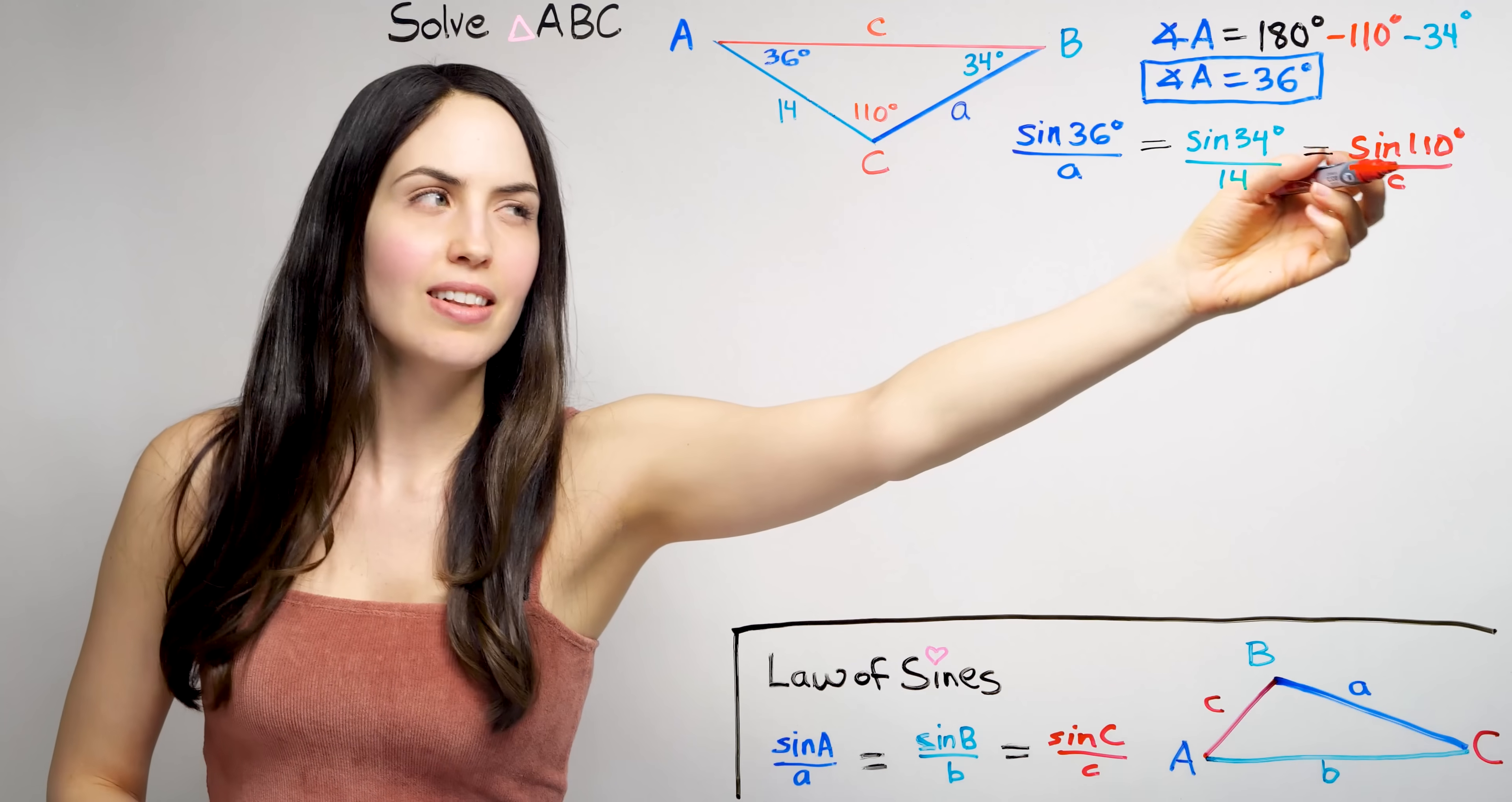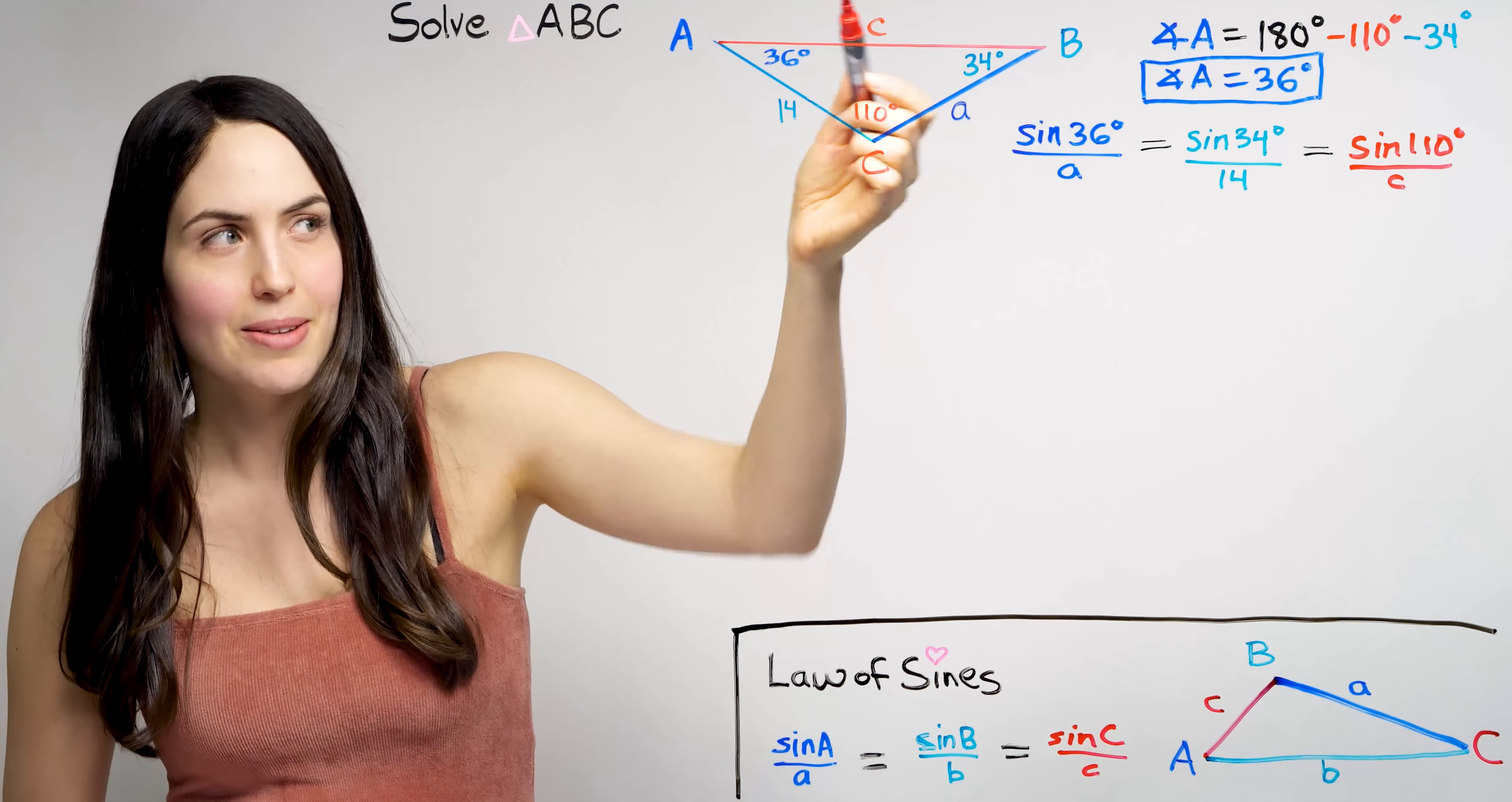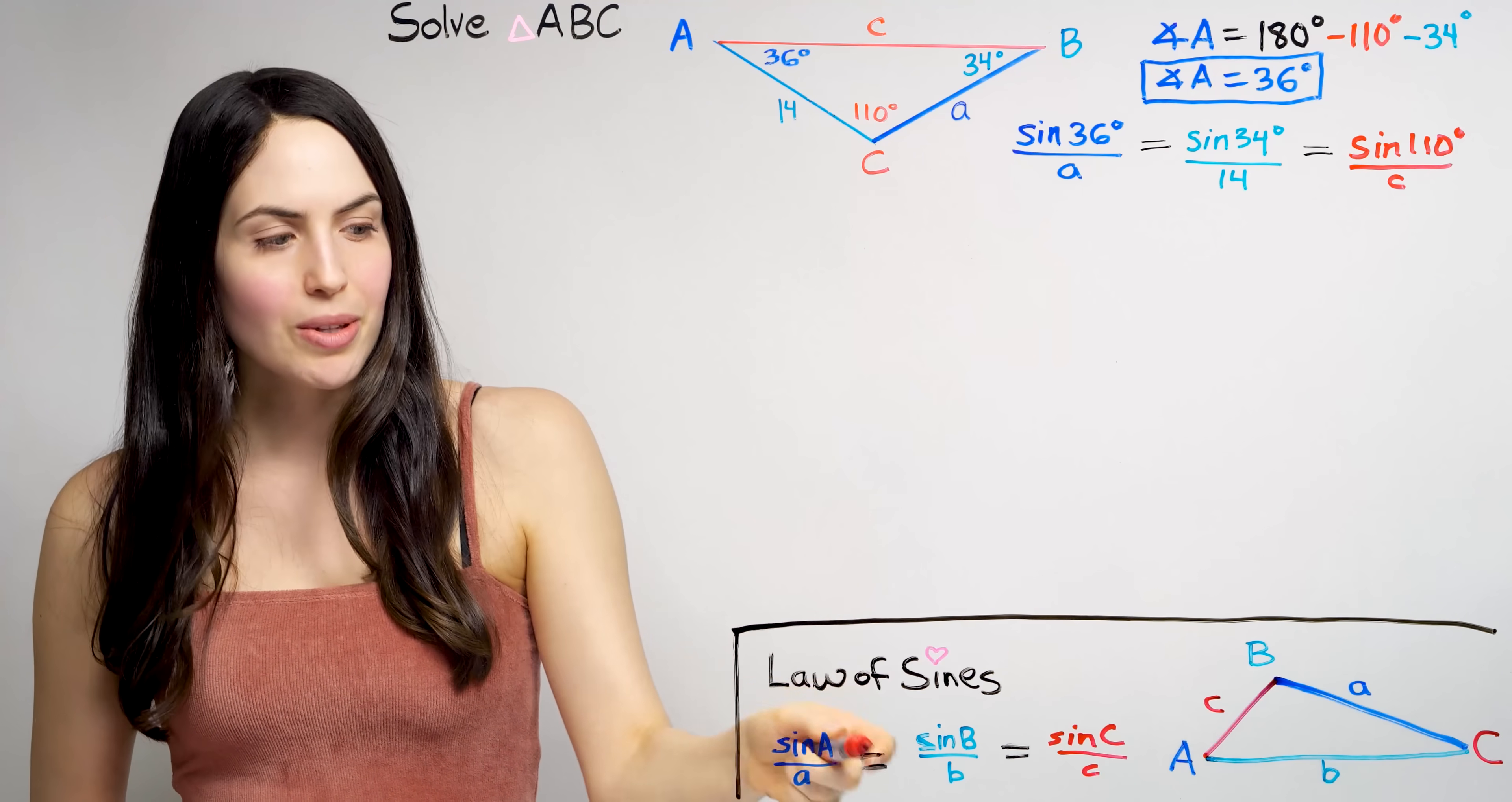So this is sine of this angle, 34 degrees, over the length opposite 14, equals, finally, sine of the last angle, 110 degrees, over the opposite side, C. So those are all the ratios from the law of sines.